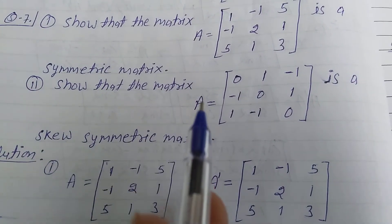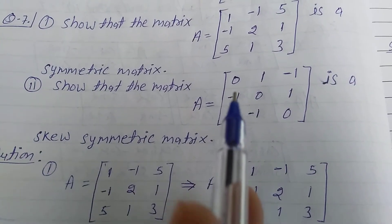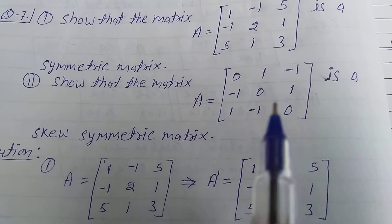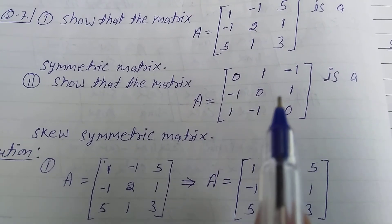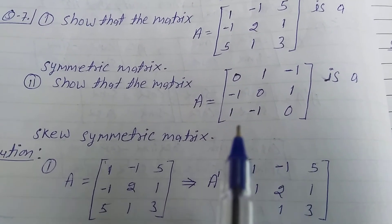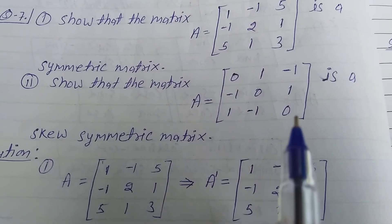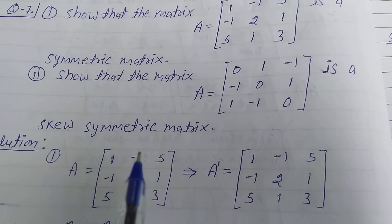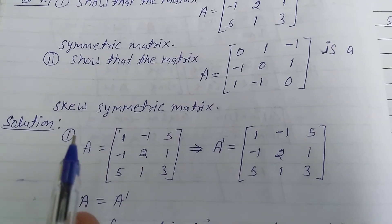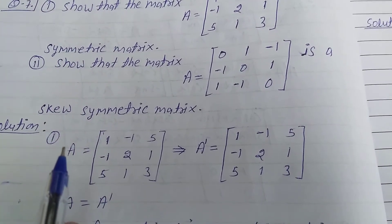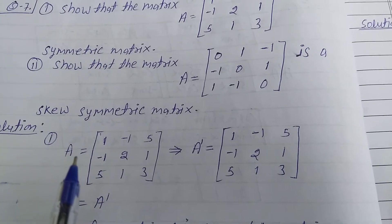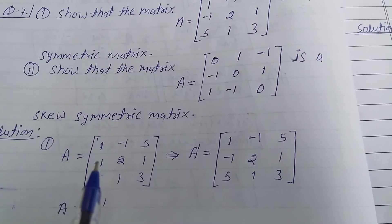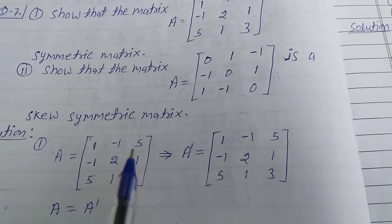Second, show that the matrix A equal to [0, 1, -1; -1, 0, 1; 1, -1, 0] is a skew symmetric matrix. Solution: start first part. Take A equal to matrix [1, -1, 5; -1, 2, 1; 5, 1, 3].